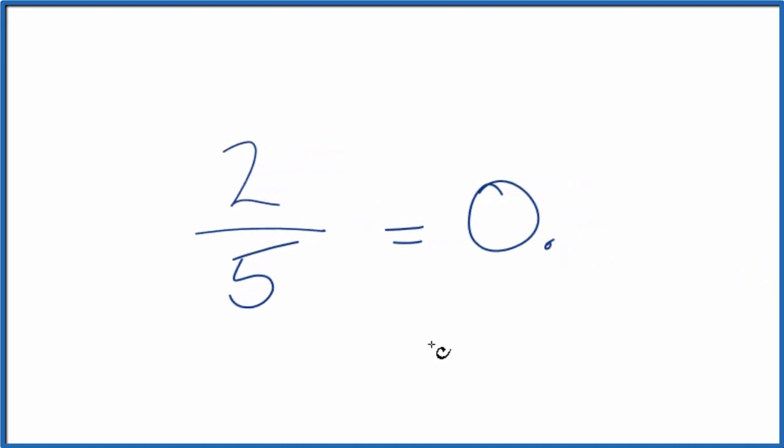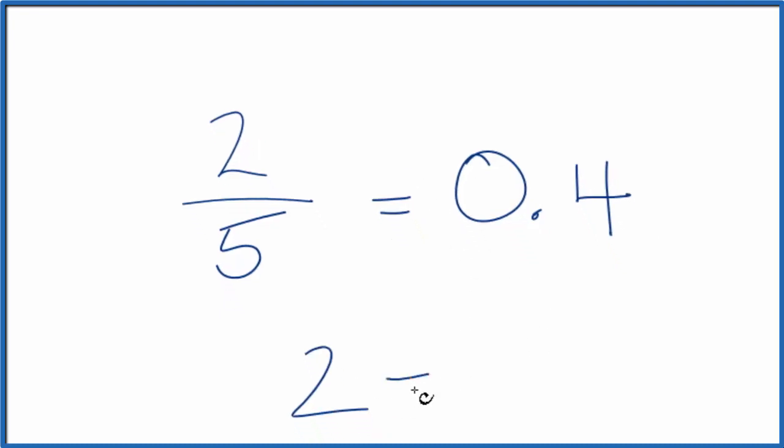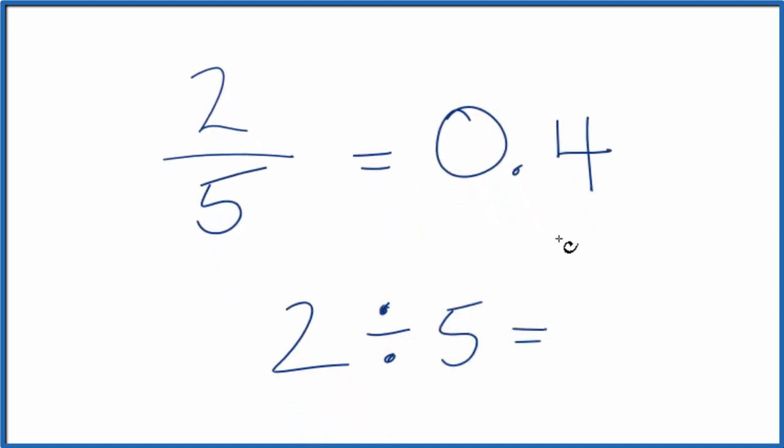If we type this into the calculator, we find out that 2 fifths, the fraction, that's equal to 0.4. Essentially we have 2 divided by 5 and we want to know how many times 5 goes into 2.